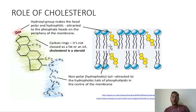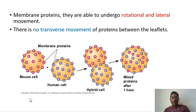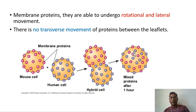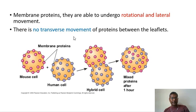Cholesterol also prevents the crystallization of the membrane by preventing hydrocarbon chains from coming together and crystallizing, thus enhancing the flexibility of the plasma membrane. After understanding how unsaturated fatty acids and cholesterol play a role in membrane fluidity, it is the turn of membrane proteins. Membrane proteins are much more variable than lipid molecules in their mobility — some appear to move freely within the lipid bilayer, whereas others are constrained.